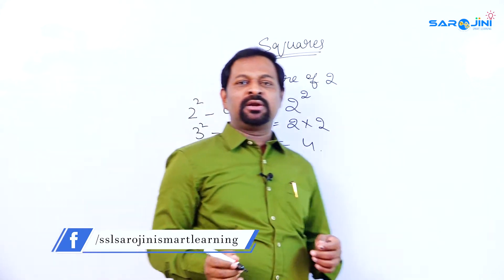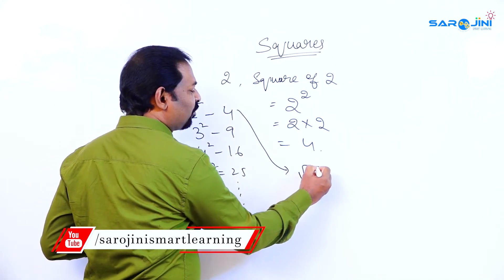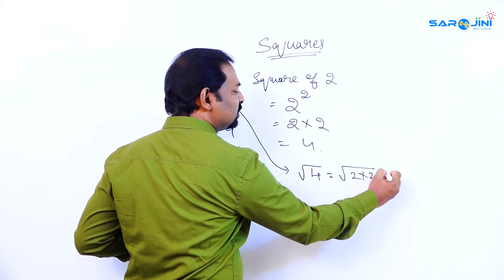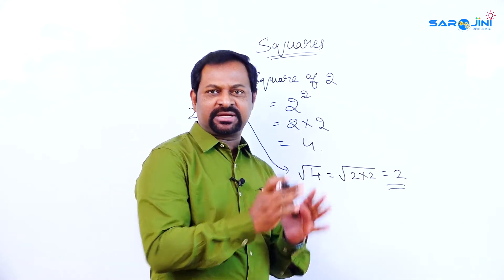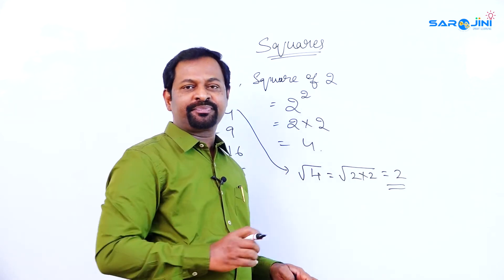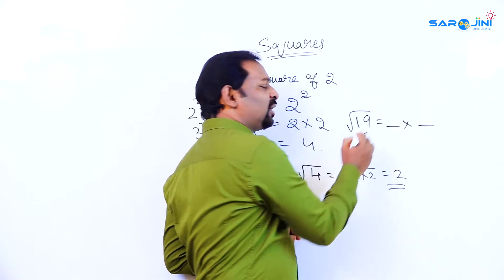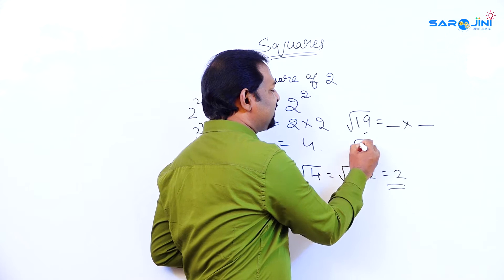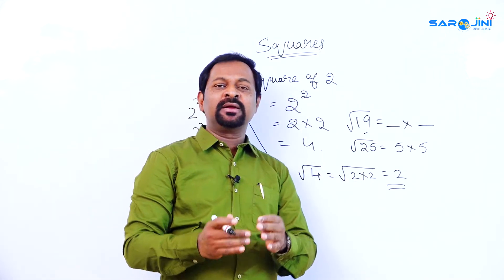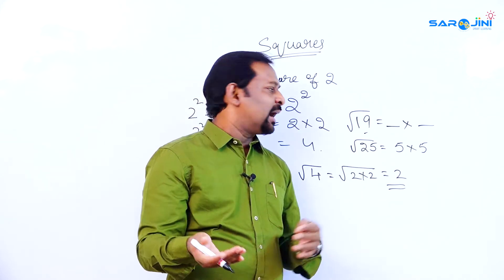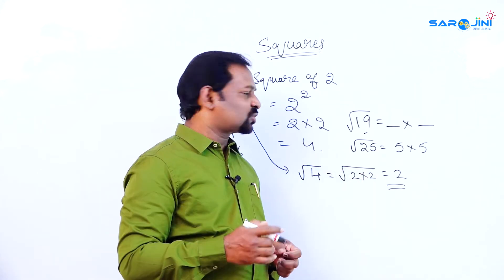In this way you learn about squares. Now for square root — if I take root 4, root 4 is nothing but 2 into 2, which equals 2. A perfect square is a square of a particular number. For example, 25 is a perfect square because 5 into 5 equals 25. But 19 is not a perfect square. Square is multiplying the same number by itself, and for square root the number must be a perfect square.